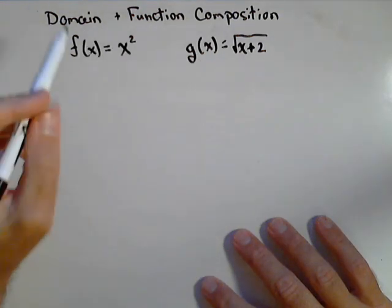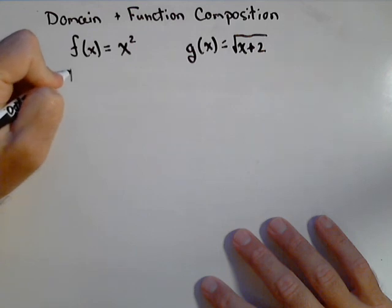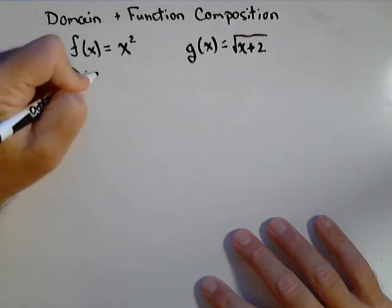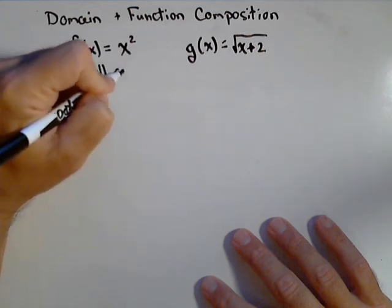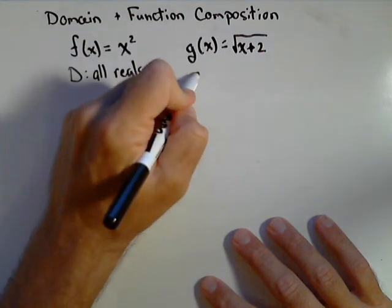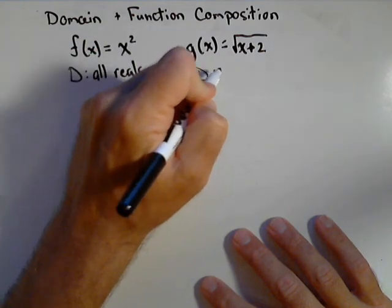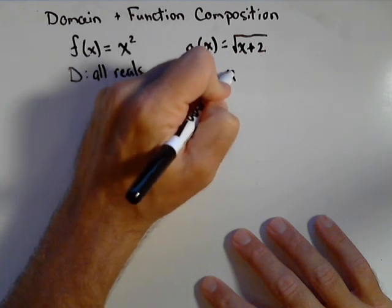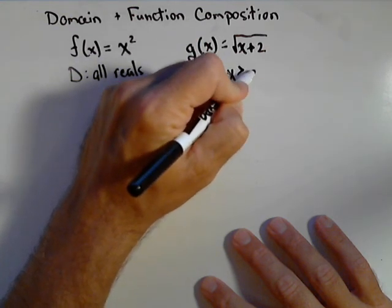So first, let's just identify their domains. The domain of x squared is all reals. The domain of g of x is that x has to be greater than or equal to negative two.